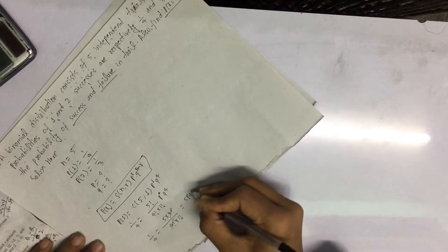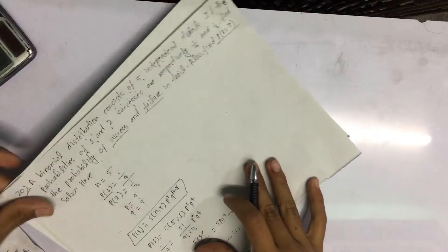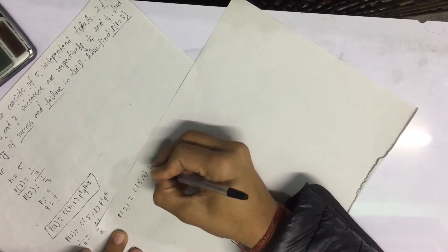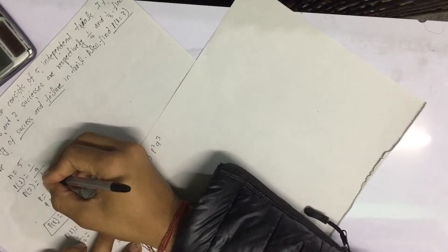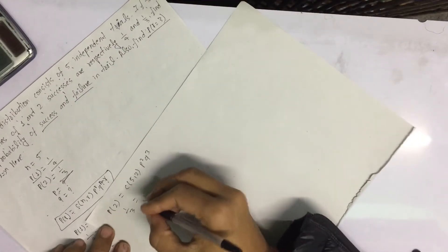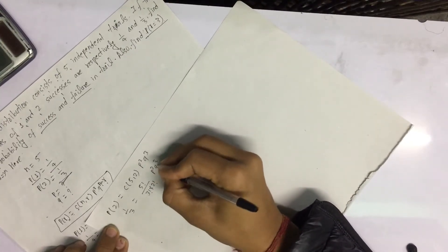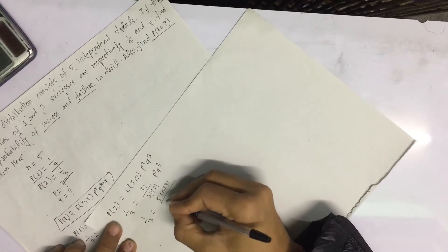For r equal to 2: P(2) = 5C2 into p squared into q to the power 3. The probability of 2 successes is 1 by 3. So 5C2 into p squared into q cubed equals 1 by 3. Five into 4 into 3 — let's simplify 5C2.